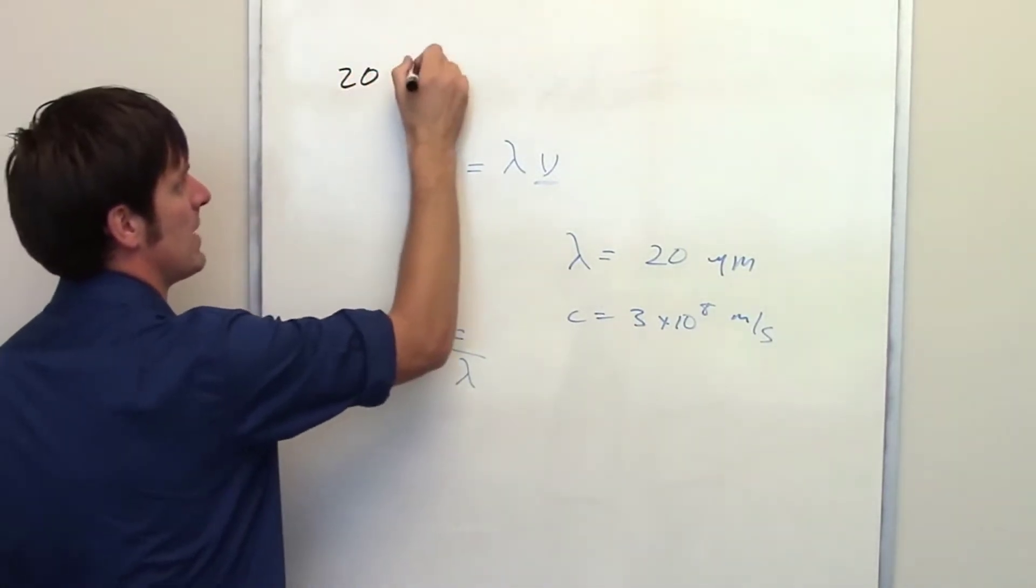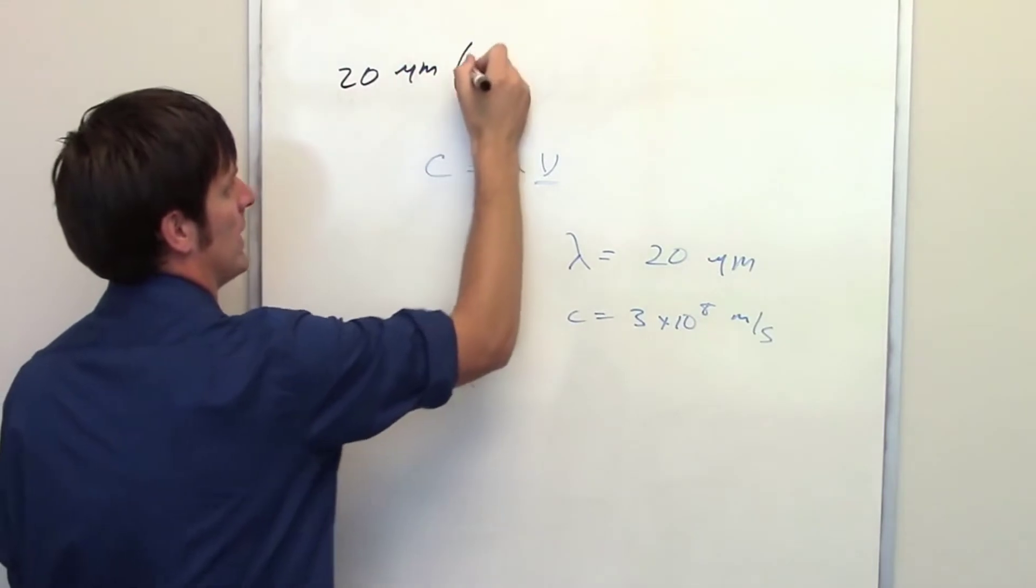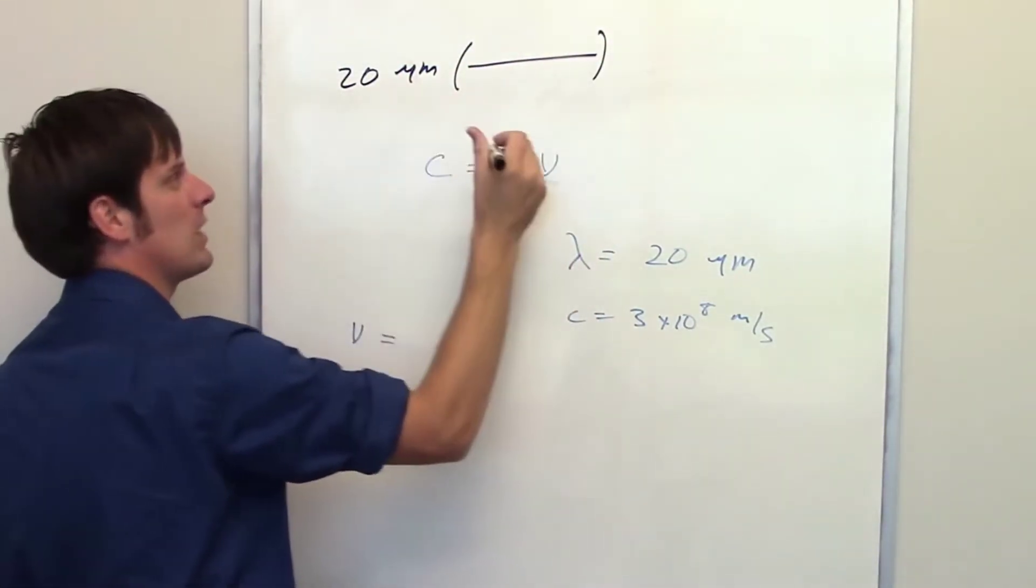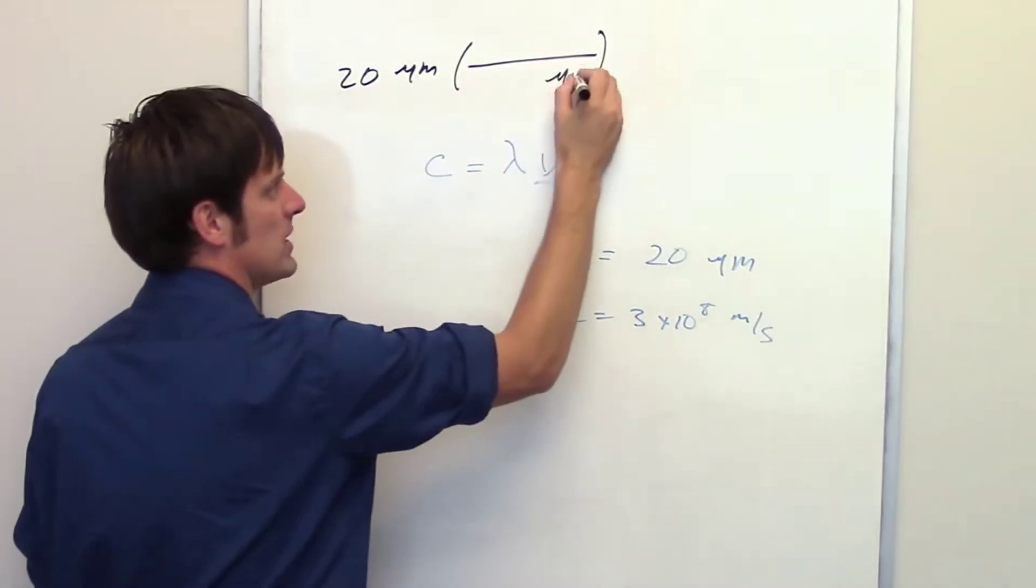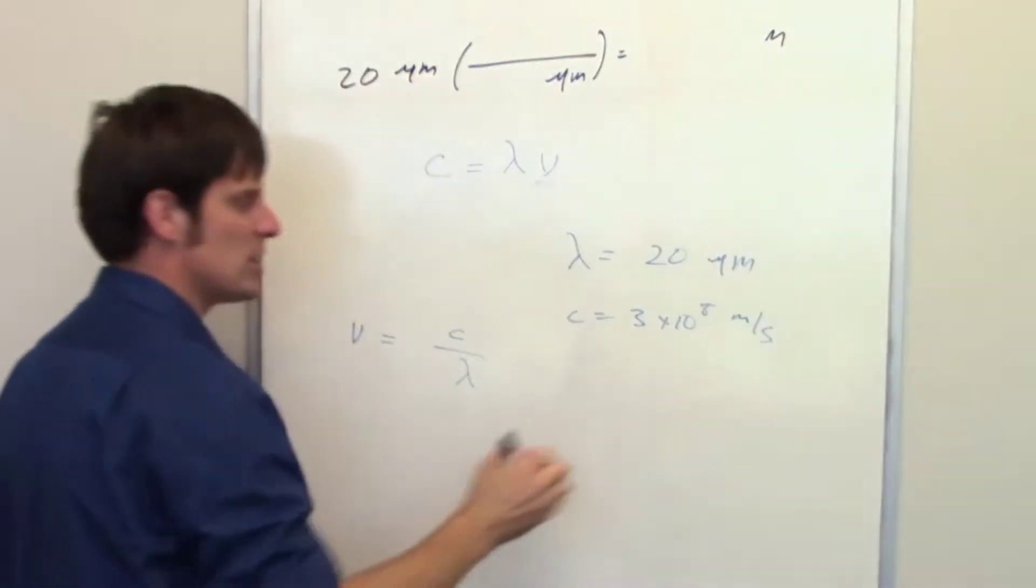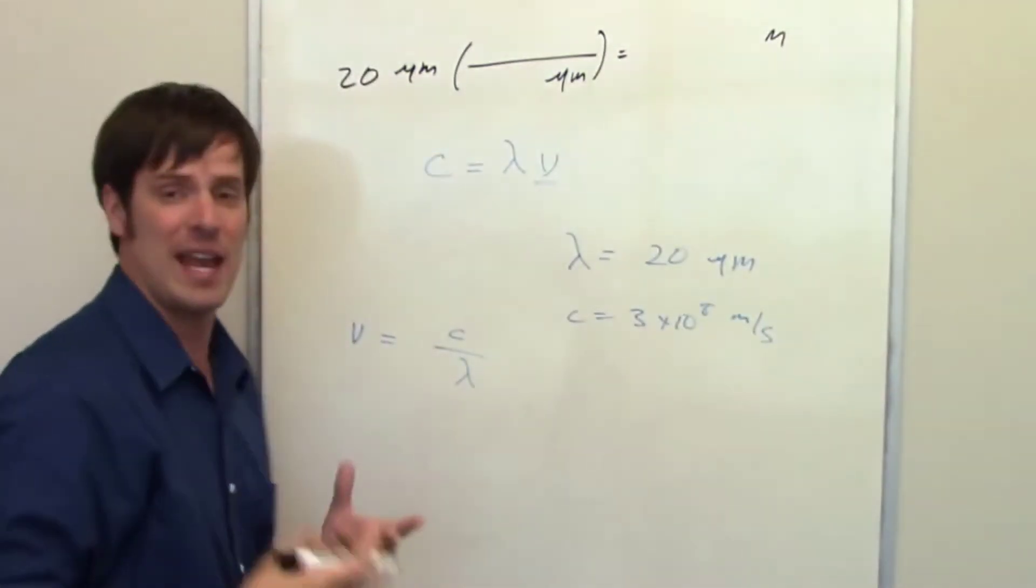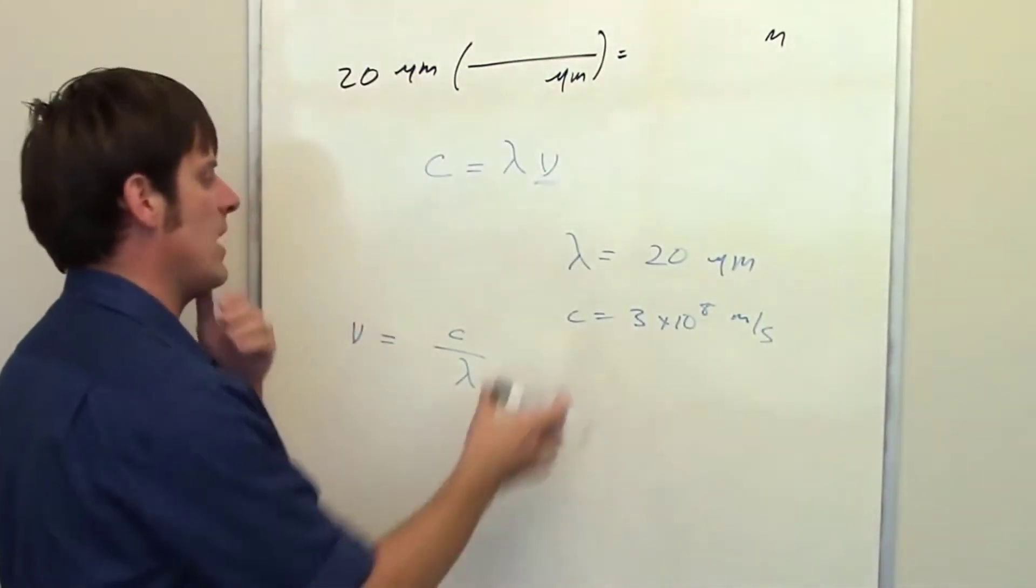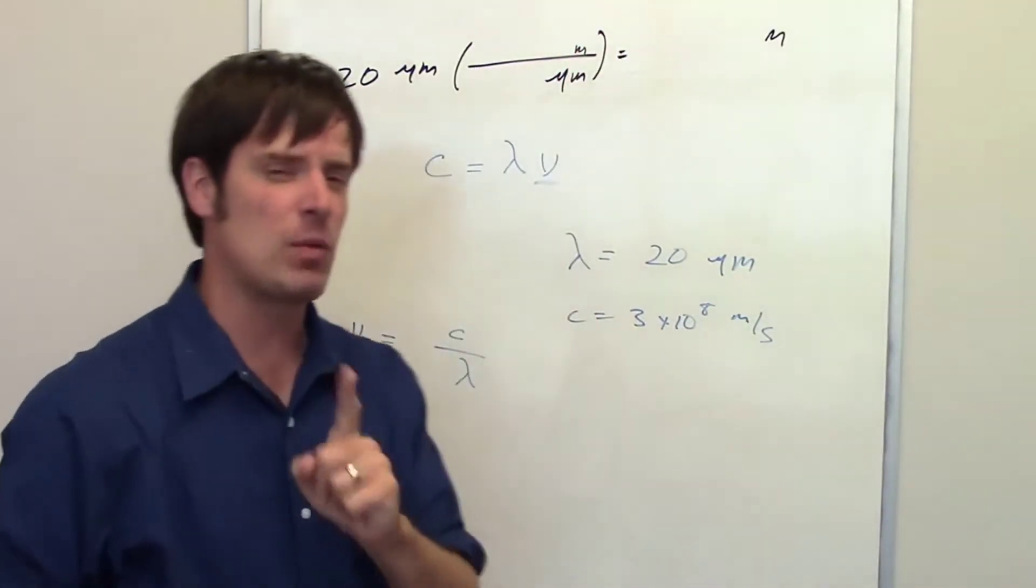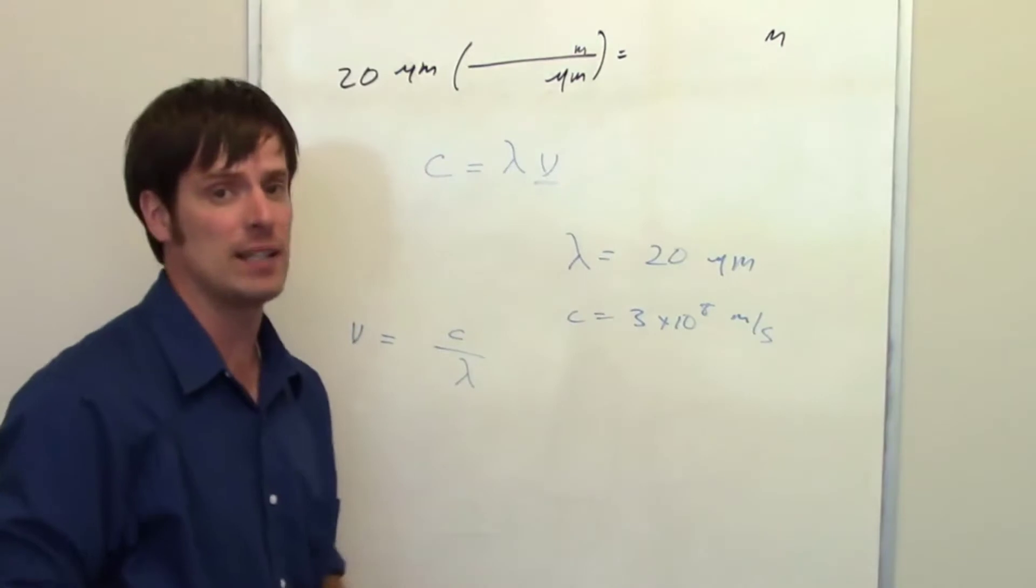We can write down that 20 micrometers is our wavelength. In the denominator, we want to cancel out the units micrometers, so I'm going to put micrometers in the denominator. I want to eventually convert this into meters because meters are the length units in my value of speed of light. So I'll put meters in the numerator.